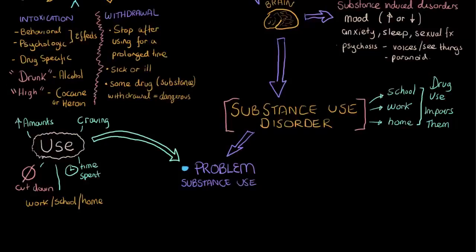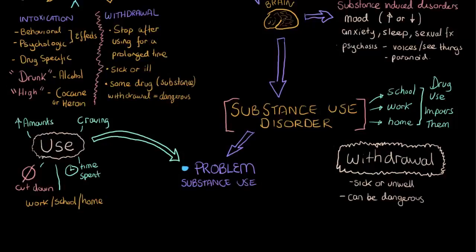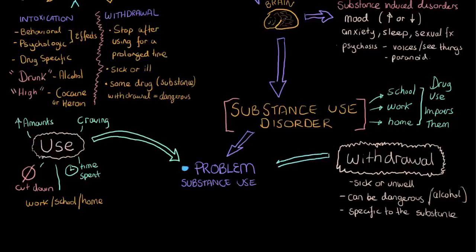A second factor we look at, apart from use, is the presence of withdrawal — something we talked about earlier. This happens after you stop using the drug after prolonged or sustained use, and you can feel pretty sick or unwell with different symptoms depending on whatever drug you were using. This suggests that physiologically you're dependent on the drug — your body is dependent on the drug. Withdrawal can be dangerous; for example, with alcohol withdrawal you can get seizures and potentially die. Withdrawal symptoms are specific to the substance, and the presence of withdrawal suggests that you have a problem.